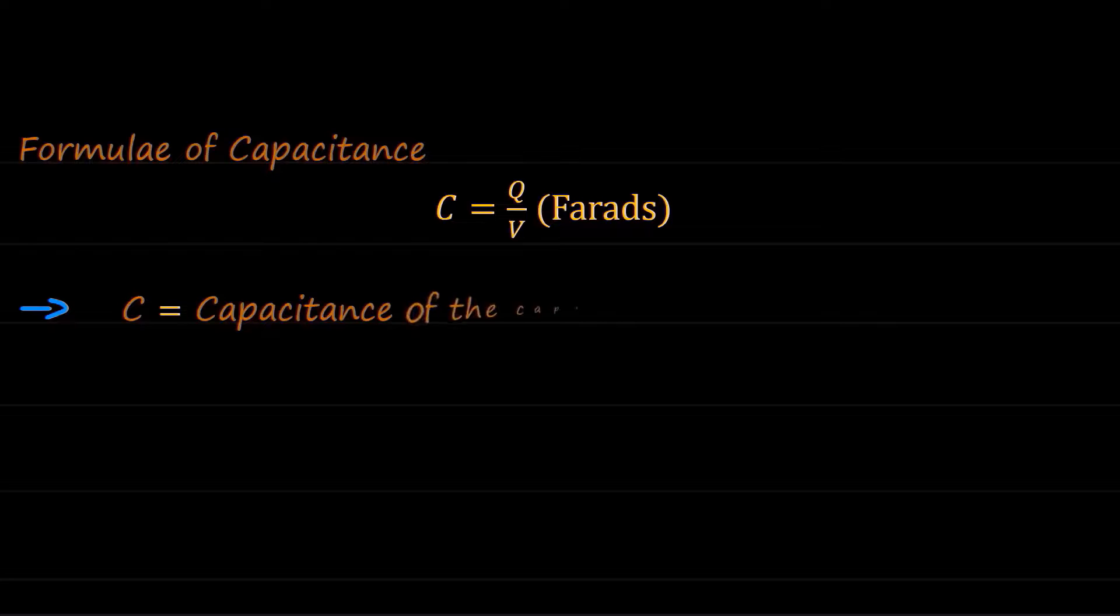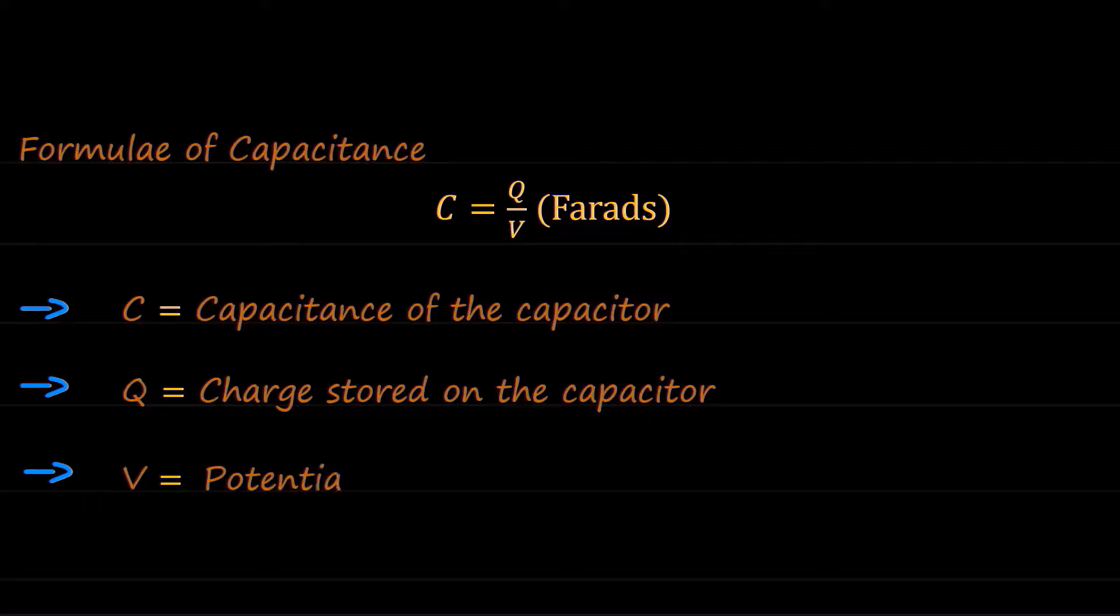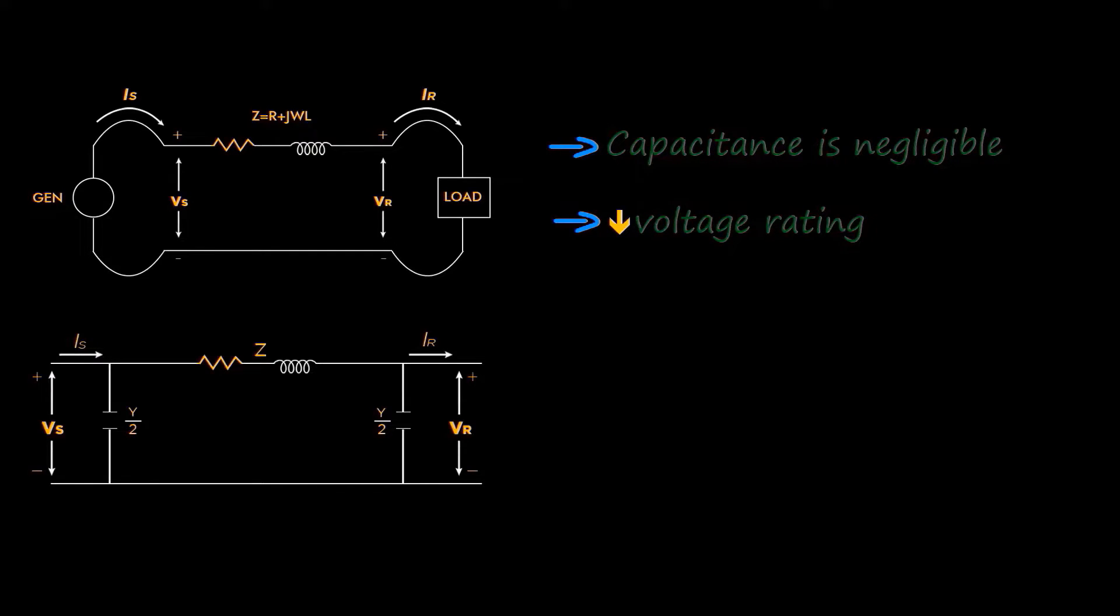Moving on, we have the formulae of capacitance: C equals Q over V. C is the capacitance of the capacitor, Q is the charge stored on the capacitor, and V is the potential difference across the capacitor. As we discussed in Part 2c, the effect of capacitance is negligible in short transmission lines because of low voltage rating. But as we move towards medium length transmission lines, the effect of capacitance can no longer be ignored due to high voltages.